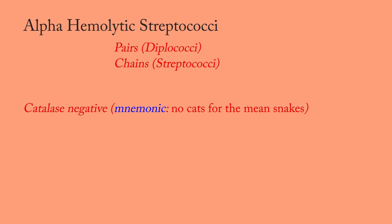There are two types of pathogens in this group: Streptococcus viridans, or S. viridans, and Streptococcus pneumoniae, or S. pneumoniae, also called pneumococcus.